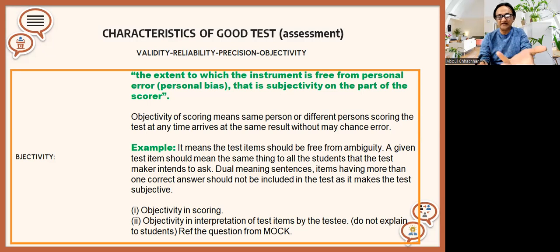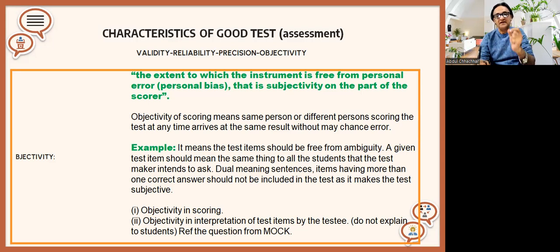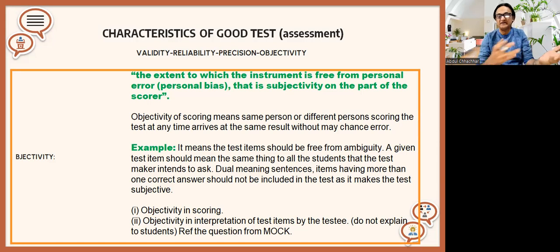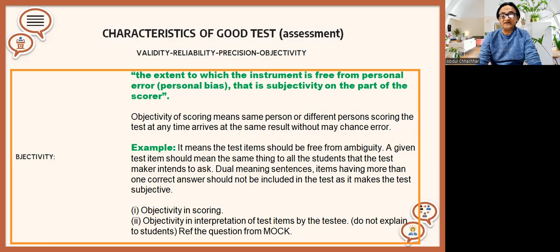In simple words, if there is personal bias in the test instrument — meaning the questions and skills you have included in your test, like multiple choice, open-ended questions, matching, and so on — those are what we call the test instrument and test components. If they are bias-free, then there is no objectivity concern. But if there is an error and you are explaining or telling students how to answer, that affects objectivity.